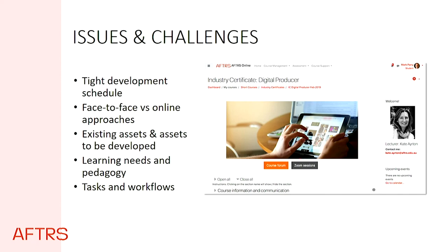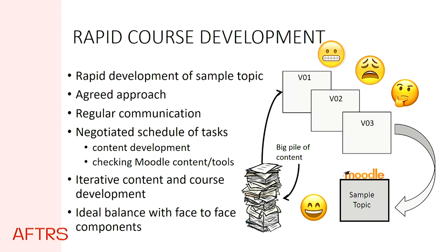That's a screenshot of our Moodle course. In terms of rapid course development, we had version one, version two, version three — more than three versions. There were emotional ups and downs but we did arrive at one we liked. We decided to develop a sample topic — I think it was apps and games — agreed on that, came up with one module we liked, and then repeated that process through the remainder. Regular communication is really crucial, as was checking which Moodle tools we would be using. That first November and December were pretty frenzied. We were really keen on getting an ideal balance of the face-to-face components with the online components.